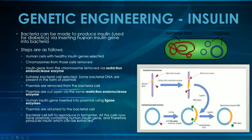Bacteria can be made to produce insulin by inserting the human insulin gene into the bacteria — insulin is for diabetics. First, take a look at a bacterial cell: it has bacterial DNA but also circular genetic material called plasmids. Plasmids are a lot easier to take out and replace back into the bacteria, so we're going to be using plasmids for this process.